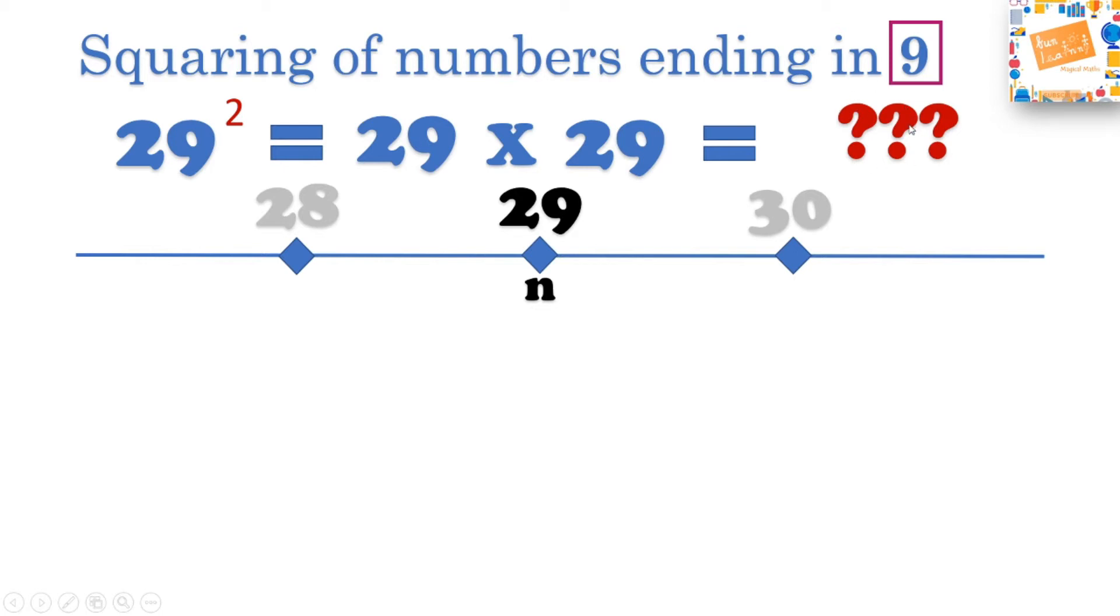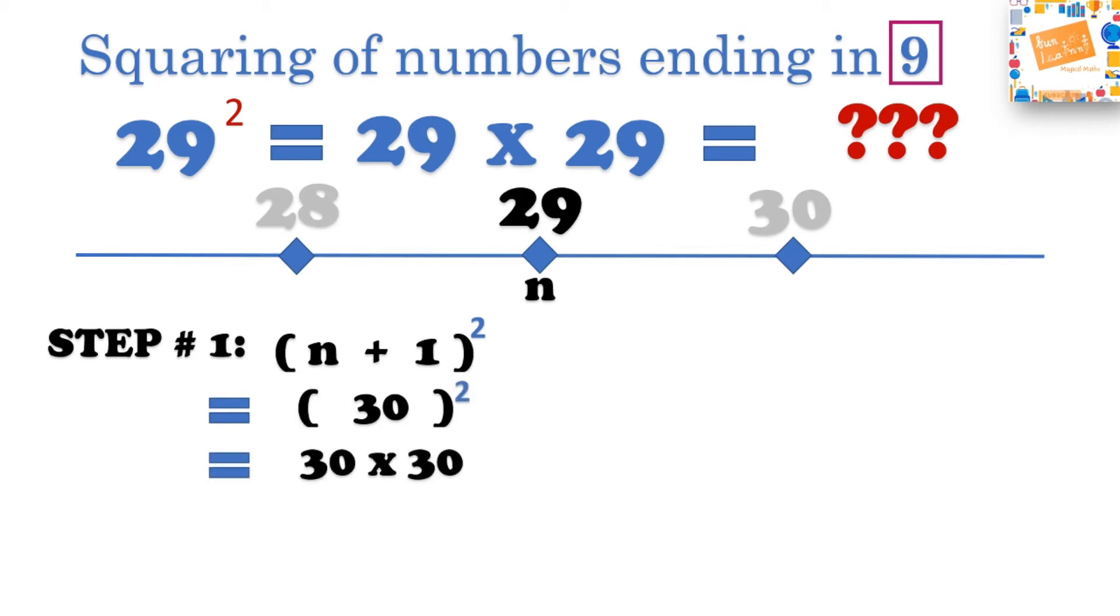There are two steps to get the calculation of 29 square or any number ending in 9. For step 1, we should go to the nearest tens, that will be n plus 1, and then square it. In this case it is 29 plus 1, that is 30, and then square this number. It is easy to square 30, which is 30 times 30. First consider both the zeros and write the zero below, then 3 times 3 which is equal to 9. So 900 is the answer to the first step.